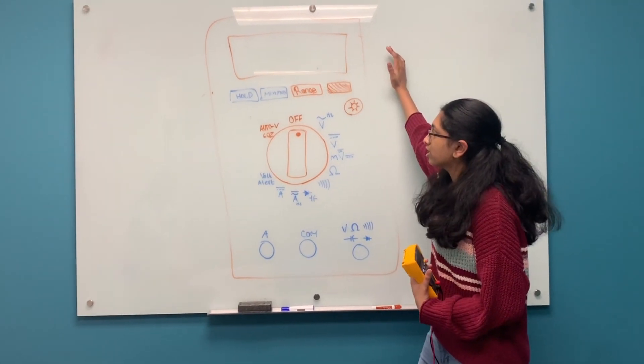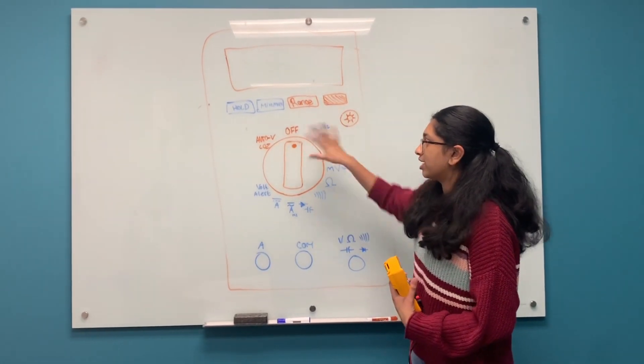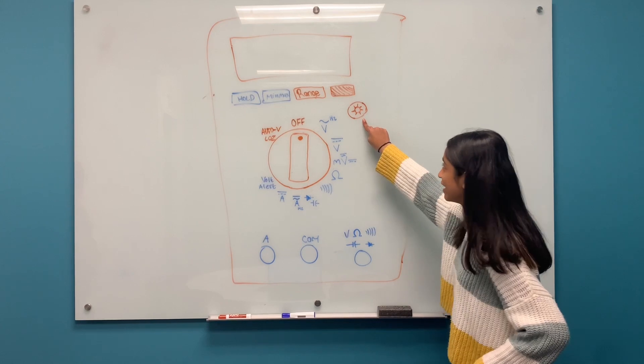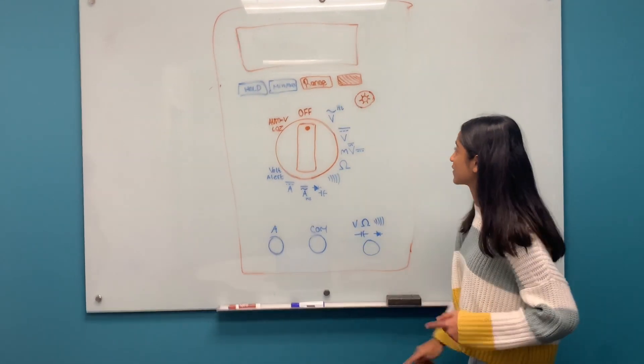On this multimeter, we're going to analyze the different buttons and what they do. So the first one is brightness, which literally just changes the brightness of the number in the screen.